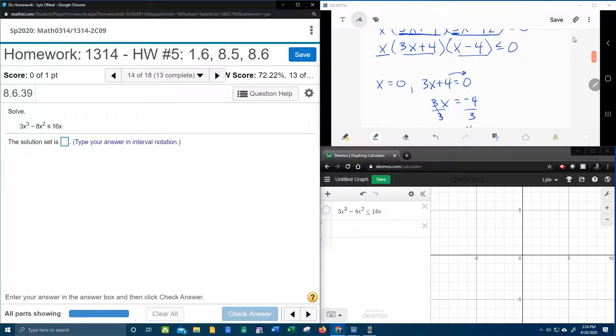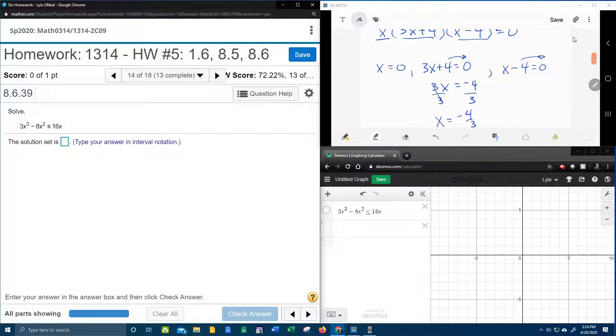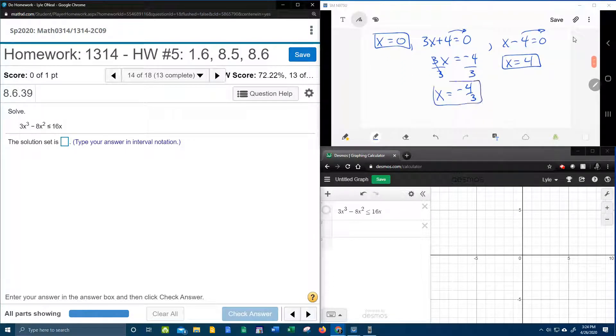And then for the other factor, we're going to have x minus 4 equal to 0. Moving the 4 over gives me x is 4. So 1, 2, 3 critical points.